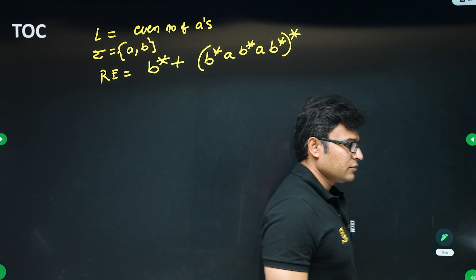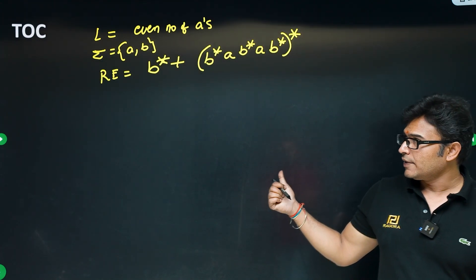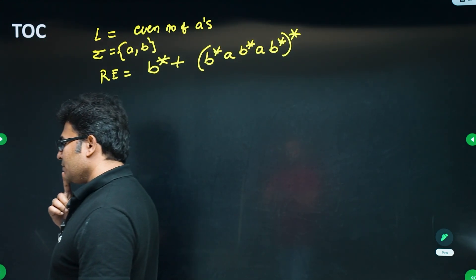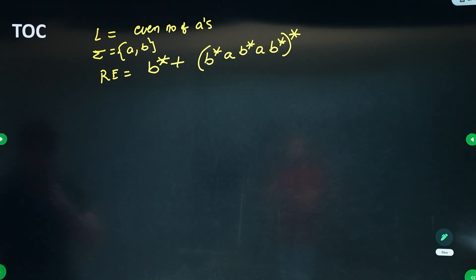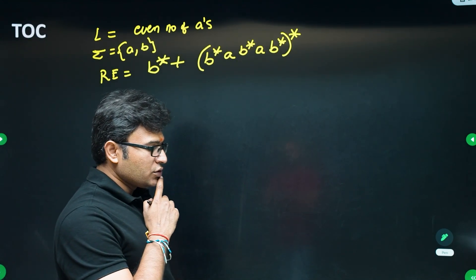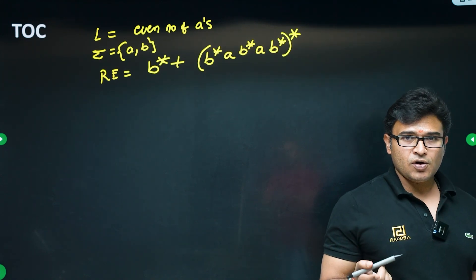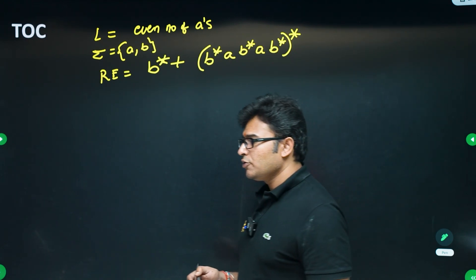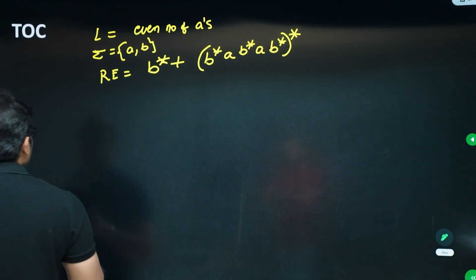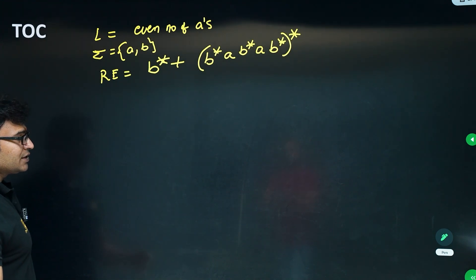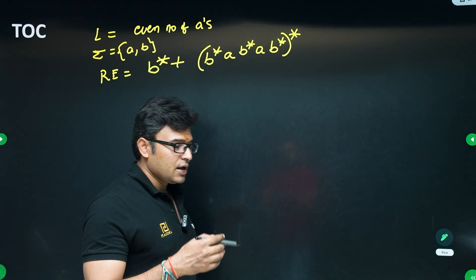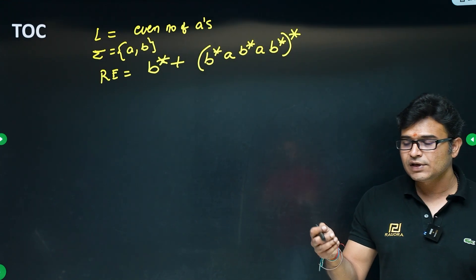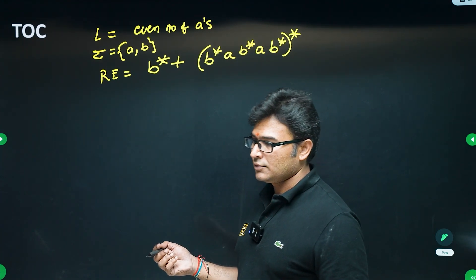When I was explaining this in offline classes, many students gave me different answers. The question is how to check whether their answer is right or wrong. One method is: generate a few strings which are in the language and check if they are generated by the regular expression. Also generate strings not in the language and see if the expression incorrectly generates them.